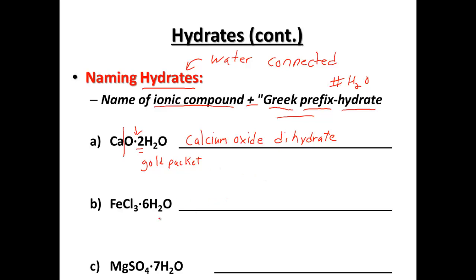For our second problem, iron is a transition element, so we have to find its charge. Chlorine is minus one; times three gives us a minus three charge. So if chlorine gives a minus three, iron must be a plus three in order to balance those two out. So iron must be a plus three here.